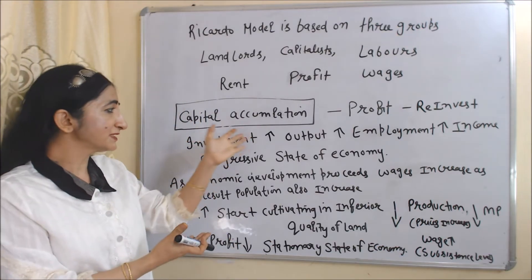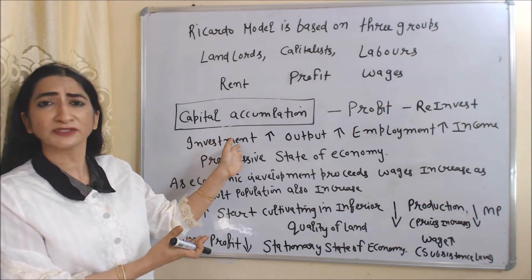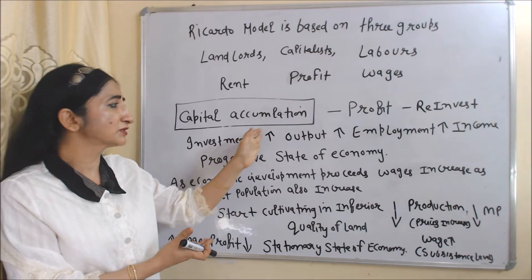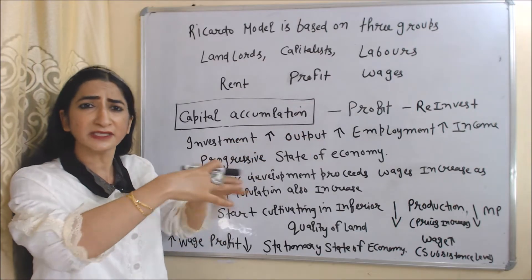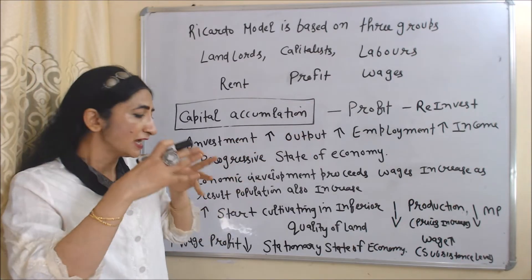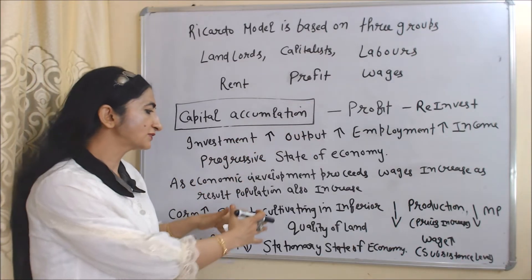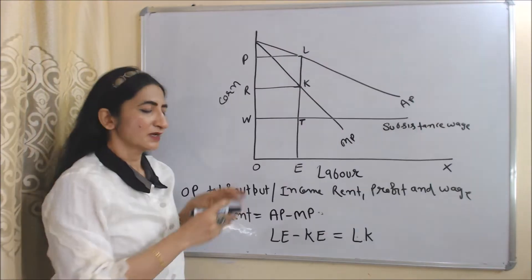But wages are high, so obviously profit of the producer will reduce. If profit reduces, that means investment reduces. If investment reduces, output, employment, and income — everything will reduce. And this will be called the stationary state of the economy.